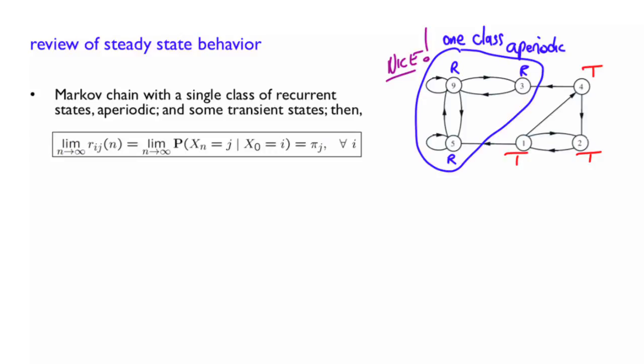In the sense that they have the following property: The probability that you find yourself at some particular state j at time n, when n is very large, converges to a steady state value that we denote by π of j. There are two aspects to this property. First, the limit exists, so the probability of state j does not fluctuate. It's settled to something in the long run. And furthermore, that probability is not affected by i.